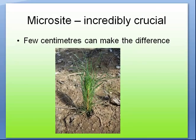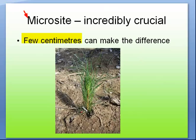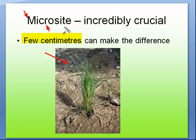One of the most crucial factors with stand initiation stage is microsite. A few centimeters can make a huge difference as to whether the tree lives or not. If a seed lands just a little bit too dry, the root radicle dries out and the tree dies. So the microsite is a huge issue for those little wee seeds.